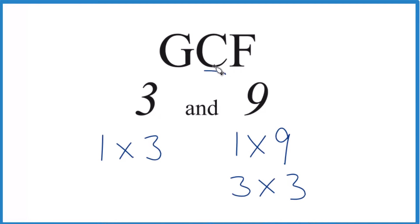What's in common? Well, 1 will go into 3, and 1 will go into 9. So that's a common factor. And then 3, that goes into 3 evenly, and 9 as well.